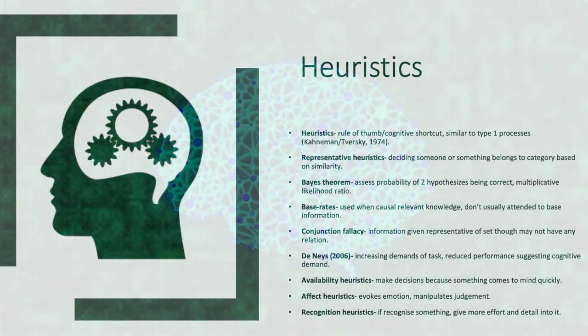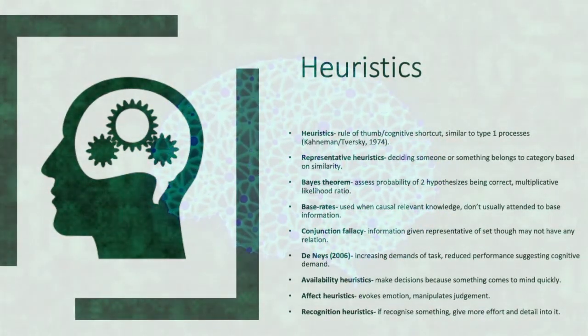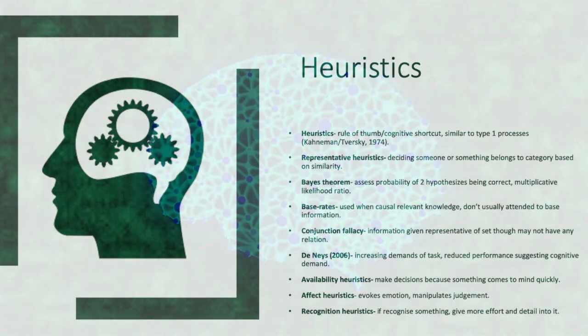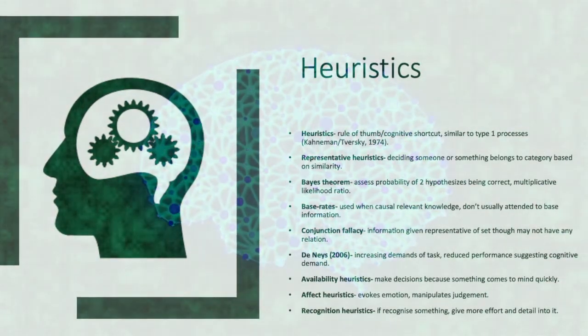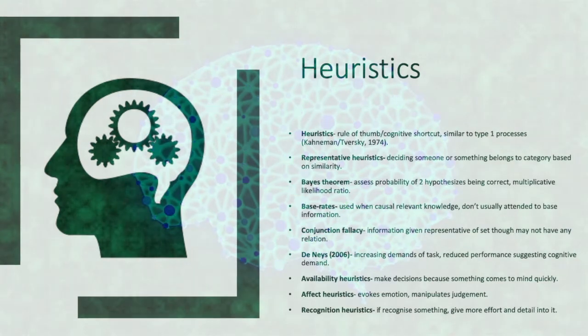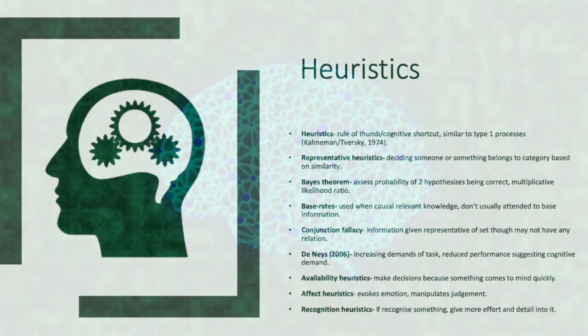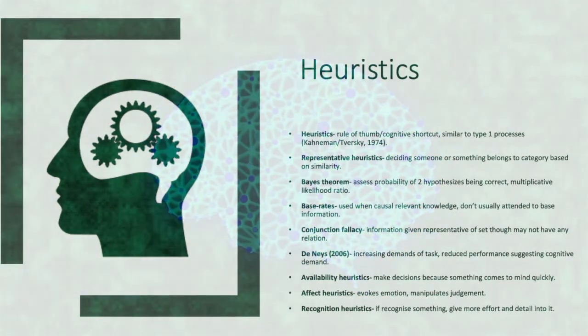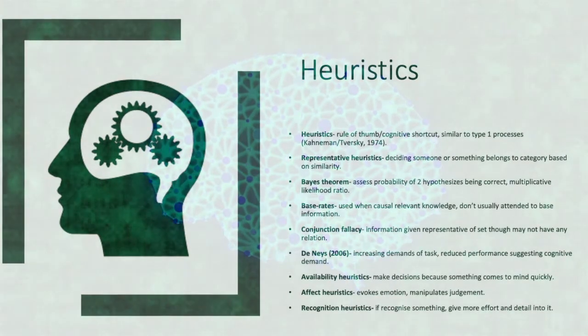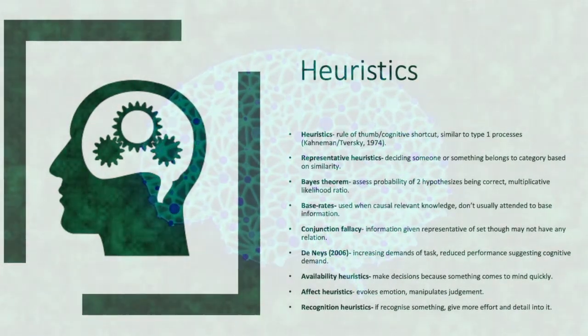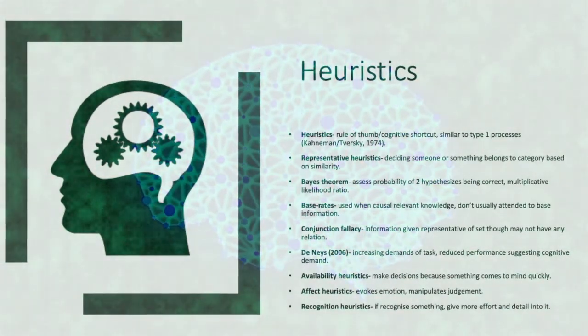Representative heuristics are when deciding someone or something belongs to a certain category based on its similarity. Bayes' theorem assesses the probability of two hypotheses being correct and depends on a multiplicative likelihood ratio.